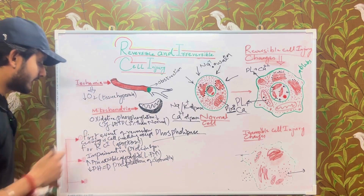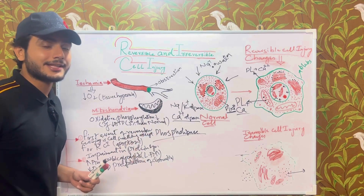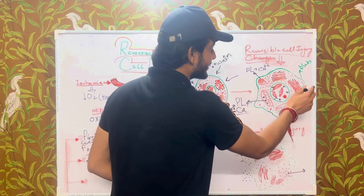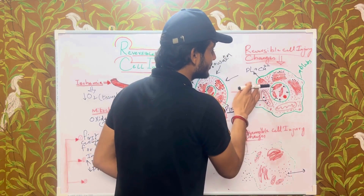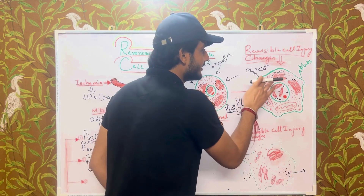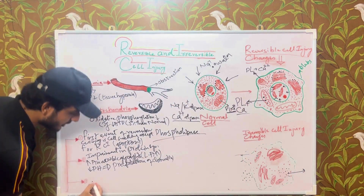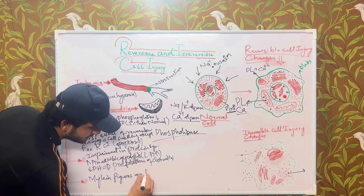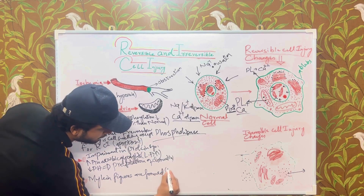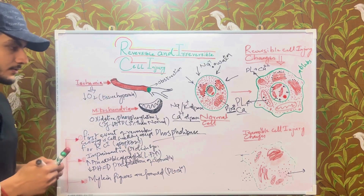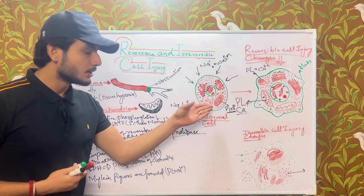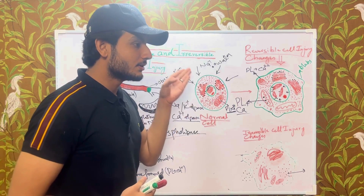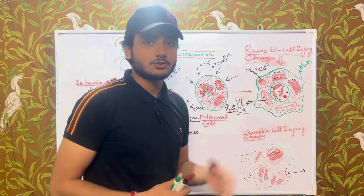That is the third change. For the fourth change: calcium activates phospholipase, which starts damaging the cell membrane, causing loss of membrane integrity, formation of blebs, and formation of myelin figures made up of phospholipid and calcium. Also, due to swelling of the mitochondria, free radicals are formed, which start damaging the chromatin and its fibrillar structure, thereby causing chromatin precipitation.